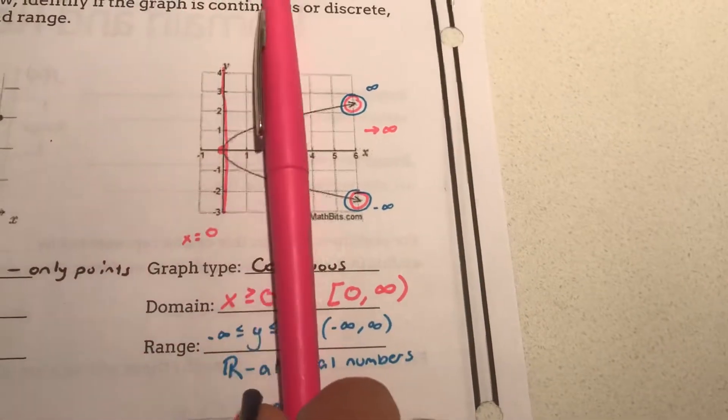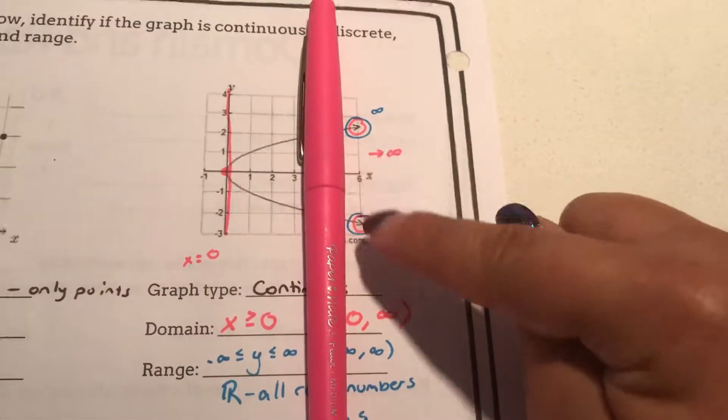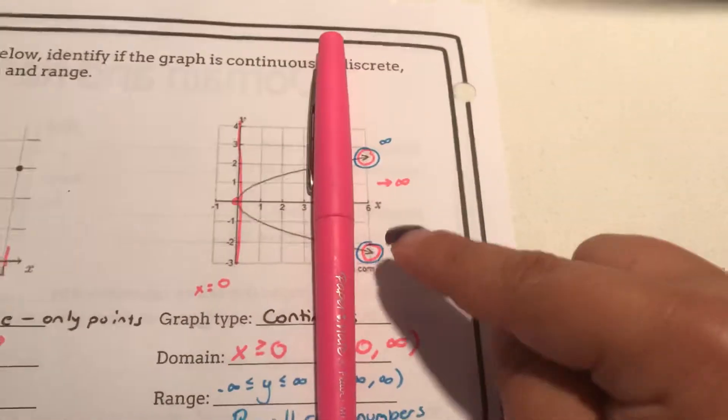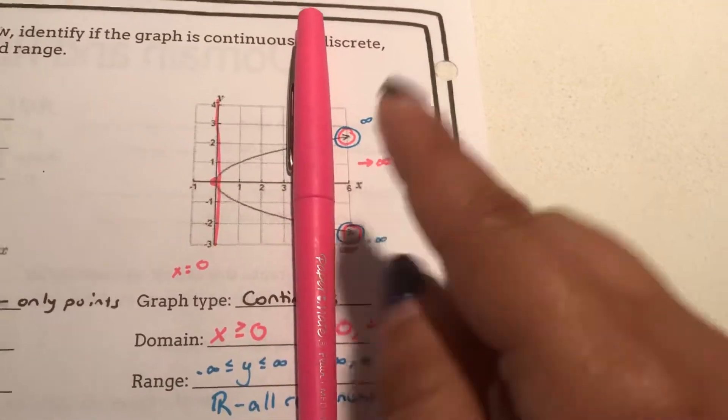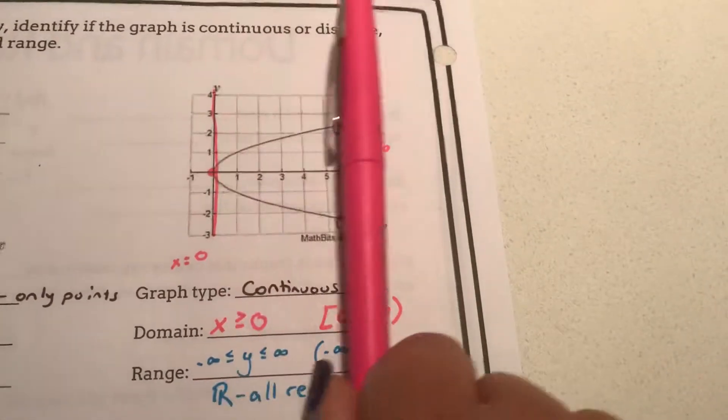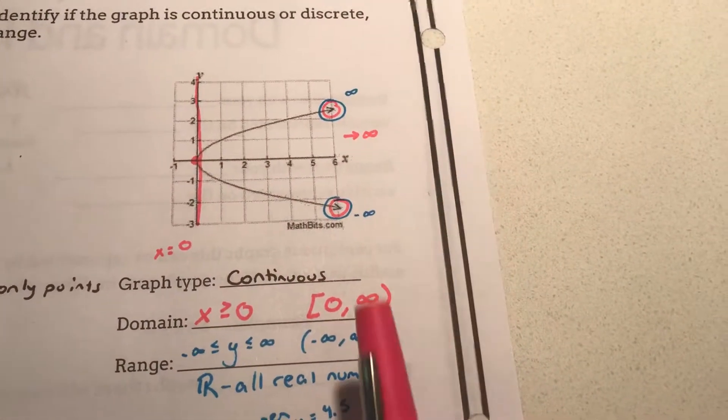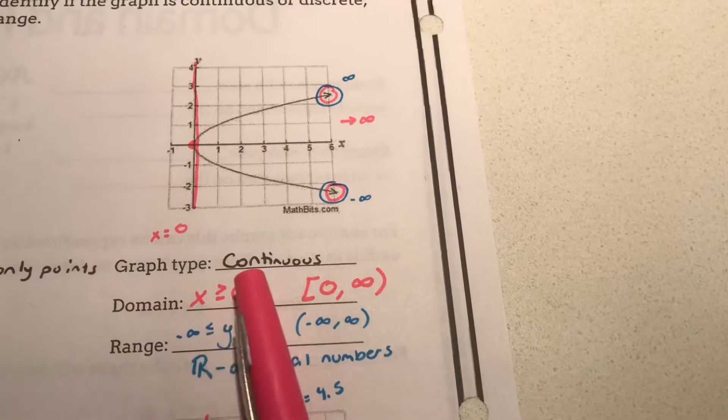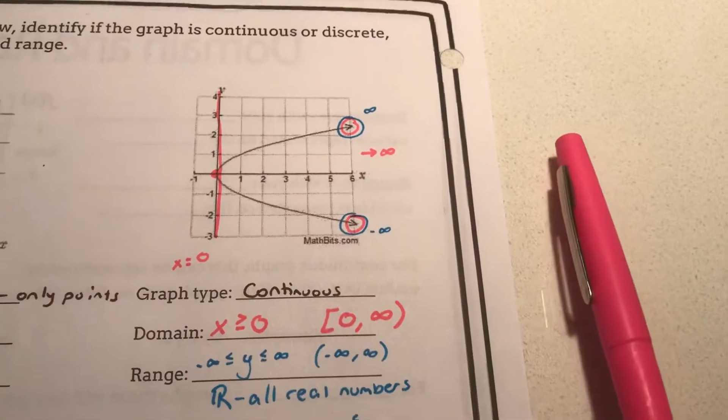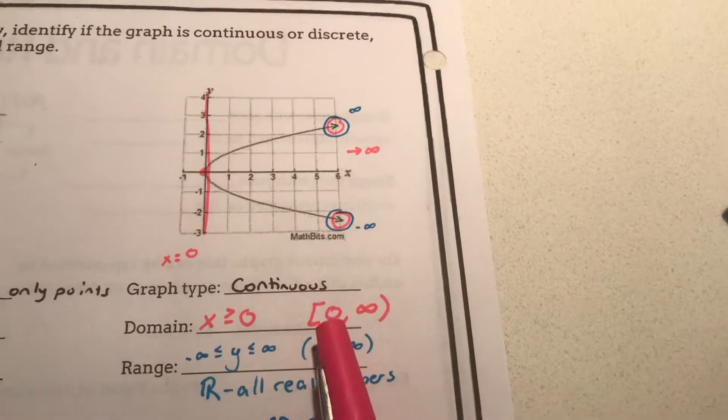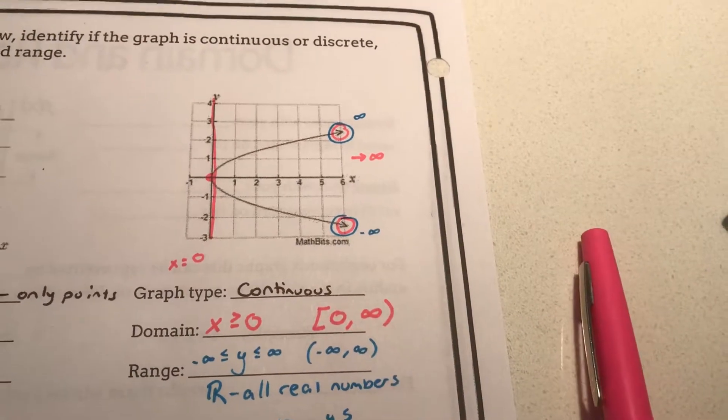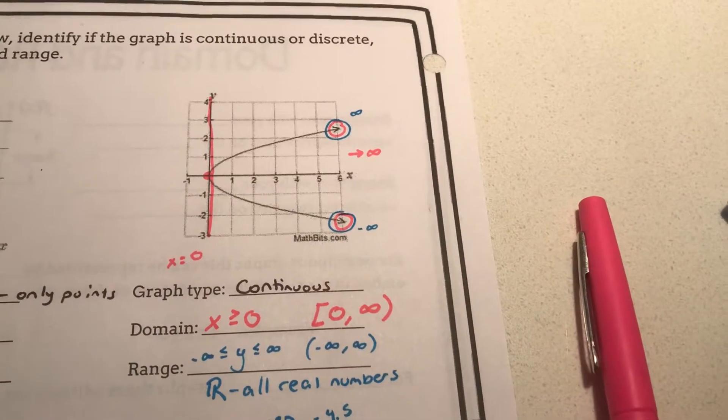So I know that we started at zero. However when I end the graph I find these two arrows. I tend to circle the arrows and note that that's infinity. It's going on forever. It's going to keep going towards the positive x values. So x is greater than zero. Any x values greater than zero is where this graph exists. Or from zero to infinity.